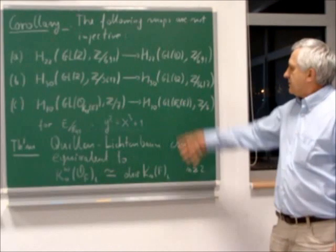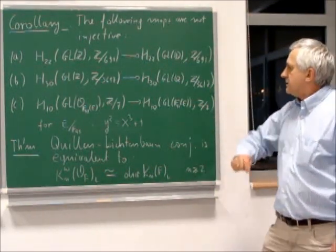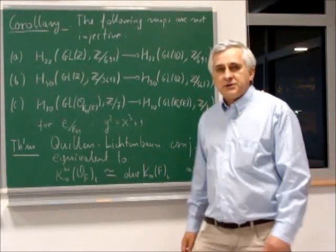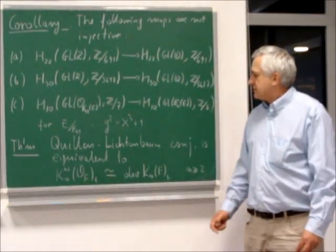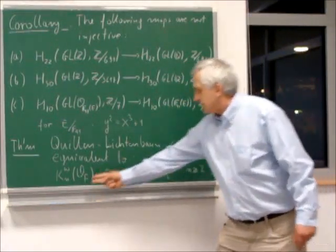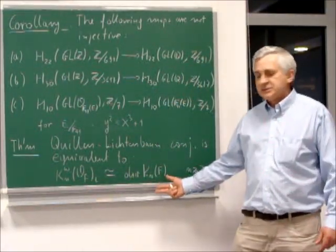So we know that there are nice examples of non-injective maps. And the last theorem I want to mention is just a statement that Quillen-Lichtenbaum conjecture is equivalent to the following isomorphism between wild kernel and divisible elements.